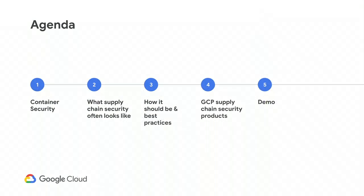Here is the agenda for this talk. We're going to start with an overview of container security and how supply chain security fits in the bigger picture. Then we'll talk about how supply chain security often looks like and the common pitfalls. We'll go over a few best practices, introduce GCP products to help you secure your supply chain, and Vic will show us a demo of how the different products and best practices tie together.